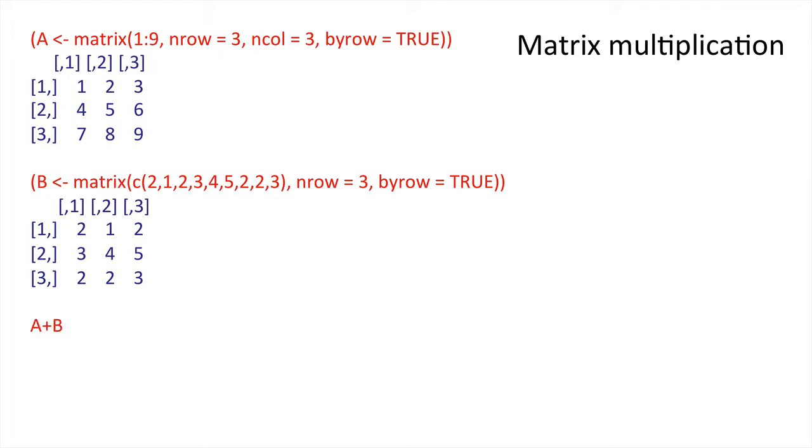What's A plus B in these cases? Well, A plus B is an element-for-element addition, and this is what we would get with the resultant matrix.